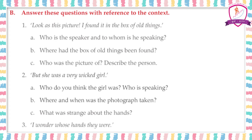Next question: who was the picture of? Describe the person. The picture was the grandmother's. To describe the person: she wore loose hair, a dress that nearly covered her ankles, her sleeves reached her wrists, she wore a lot of bangles, she stood with legs apart, had her hands on her hips, and had an almost devilish smile on her face.